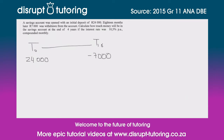They've asked us to calculate how much money will be in the savings account at the end of four years. Looking at this monthly, there are 48 months in four years, so at t48 we want to figure out how much money we will have left at the end of those four years.